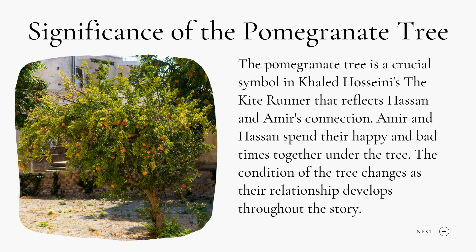Significance of the pomegranate tree: The pomegranate tree is a crucial symbol in The Kite Runner that reflects Hassan and Amir's connection. Amir and Hassan spend their happy and difficult times together under the tree, and its condition changes as their relationship develops throughout the story. When they are small boys, they carve their names into the tree and claim ownership of it, showing their close friendship. However, as their friendship deteriorates due to Amir's betrayal of Hassan, the tree no longer yields fruit, indicating the decline of their friendship.